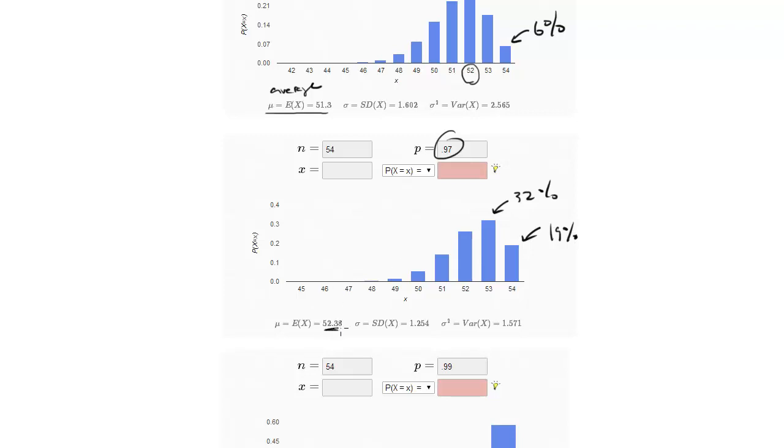Notice your average is around a 52 still. So even if you're 97% accurate, you are most likely to get a 53, and on average, you're going to get a 52.38, right, but a 52. So even if you're 97% accurate, your chances of getting a 54 are only 19%.